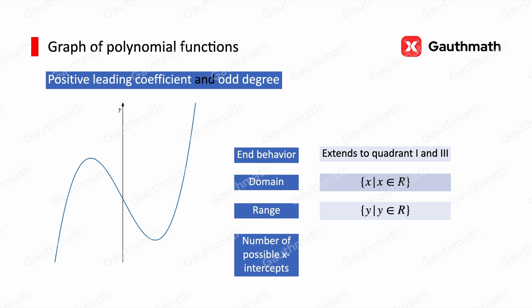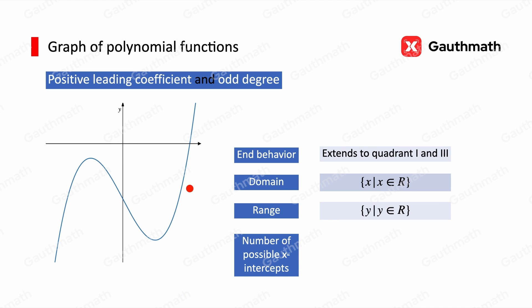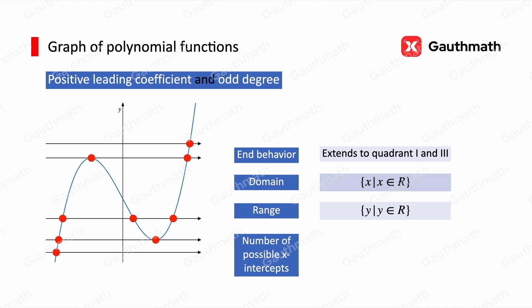We can also see the possible x-intercepts. Moving the x-axis, there can be 1, 2, or 3 x-intercepts. So the minimum number of x-intercepts is 1 and the maximum number is 3. The number of possible x-intercepts ranges from 1 to the degree of the function.